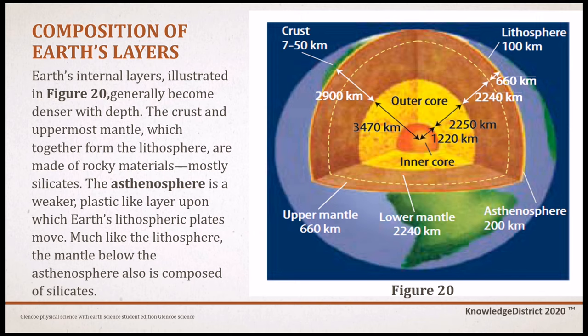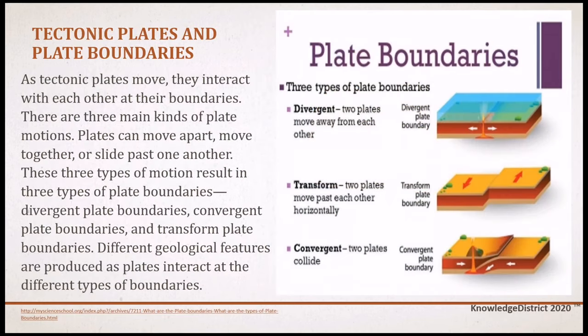The asthenosphere is a weaker, plastic-like layer upon which Earth's lithospheric plates move. Much like the lithosphere, the mantle below the asthenosphere is also composed of silicates. As tectonic plates move, they interact with each other at their boundaries. There are three main kinds of plate motion: plates can move apart, move together, or slide past one another, resulting in three types of plate boundaries.